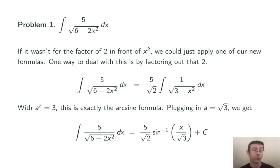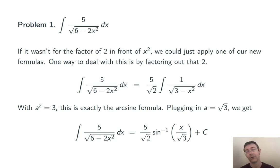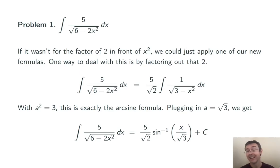Now I'm ready to use the arc sine formula. Here, a is the square root of 3 — you shouldn't panic over the fact that that is not a perfect square; 3 is in fact the square root of 3, squared, and that's all we need. Applying that formula, I get 5 over the square root of 2 times the inverse sine of x over the square root of 3, plus C.